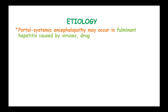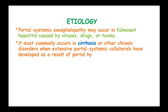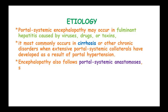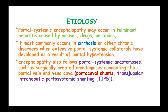Portosystemic encephalopathy may occur in fulminant hepatitis caused by viruses, drugs, and toxins. It mostly occurs in cirrhosis or chronic disorders when extensive portosystemic collaterals have developed as a result of portal hypertension. Encephalopathy also follows portosystemic anastomosis such as medically created anastomosis connecting the portal vein and vena cava, or portocaval shunts, and transjugular intrahepatic portosystemic shunting, known as TIPS.